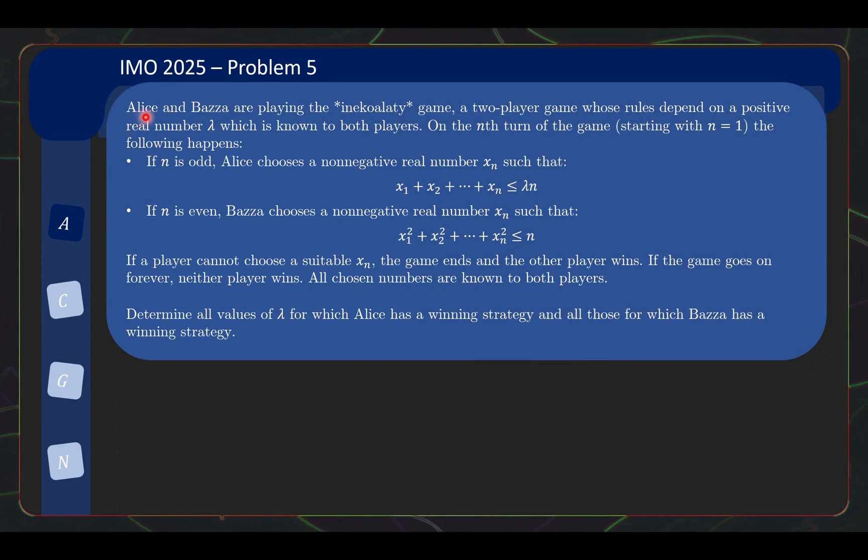The problem statement is as follows. Alice and Bazaar are playing the inequality game, a two-player game whose rules depend on a positive real number lambda, which is known to both players. On the nth turn of the game starting with n equals 1, the following happens. If n is odd, Alice chooses a non-negative real number xn such that x1 plus dot dot plus xn less than or equal to lambda n. If n is even, Bazaar chooses a non-negative real number xn such that the sum of the xi squares is less than or equal to n. Whoever cannot choose a suitable xn, the game ends and that player loses, the other player wins.